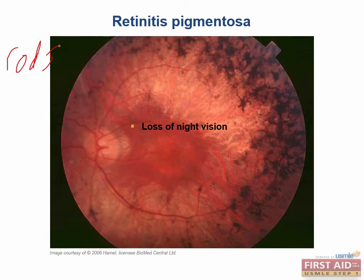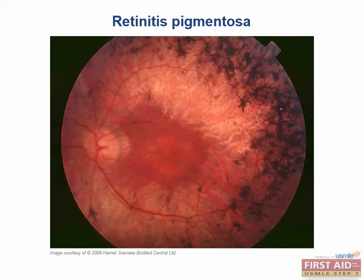Other symptoms can also include tunnel vision as well as loss of central vision. One other thing you should look out for on your exam is the black bone spicule pigmentation that can occur on the retinal epithelium in retinitis pigmentosa. The last part of the name, pigmentosa, should help you remember that this is one of the commonly seen presentations on the fundoscopic exam.